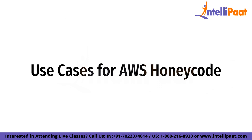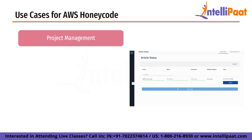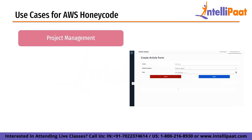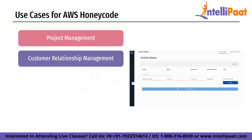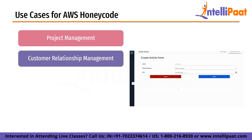Now we'll look at some of the use cases of AWS Honeycode. Starting with project management — Honeycode can be used to create custom project management apps that track tasks, deadlines and milestones, helping businesses stay organized and ensure that projects are completed on time. Next is customer relationship management. Honeycode can be used to build custom CRM apps that track customer interactions, sales leads and marketing campaigns, helping businesses manage their customer relationships more effectively.